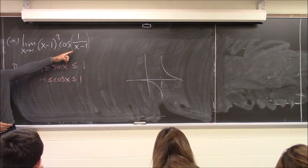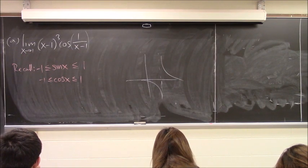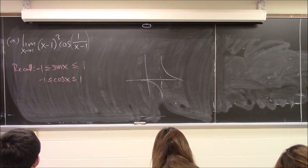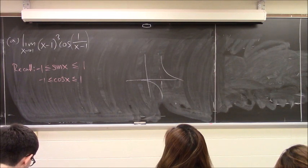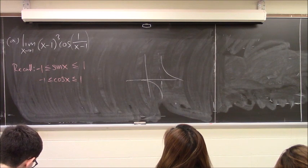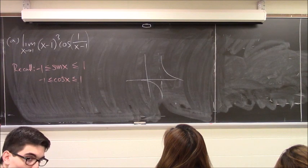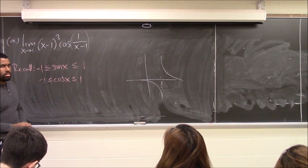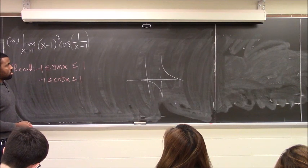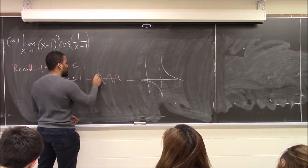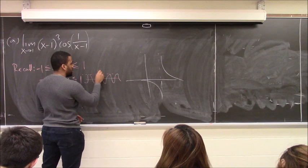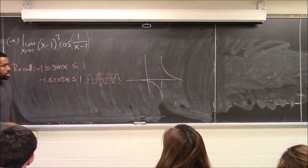Getting at x equals 1 is a problem, but we're in a limit — we don't care about being at 1. So as long as x is not 1, what can we do? The cosine function has a boundary: the most it can be is 1, and the least is negative 1. As long as I'm plugging in values for which it's defined, cosine gives me an output between negative 1 and 1. So I can multiply through by this guy.